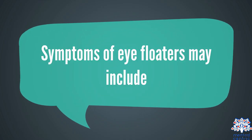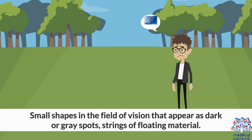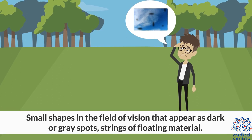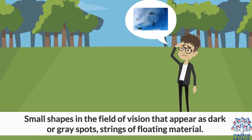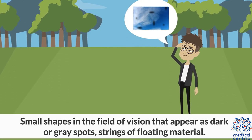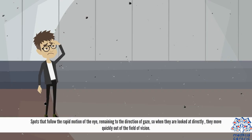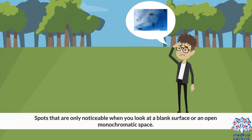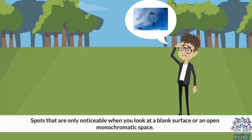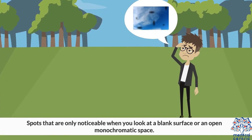Symptoms of eye floaters may include small shapes in the field of vision that appear as dark or grey spots or strings of floating material. Spots that follow the rapid motion of the eye, remaining in the direction of gaze — so when looked at directly, they move quickly out of the field of vision. Spots that are only noticeable when looking at a blank surface or an open, monochromatic space.